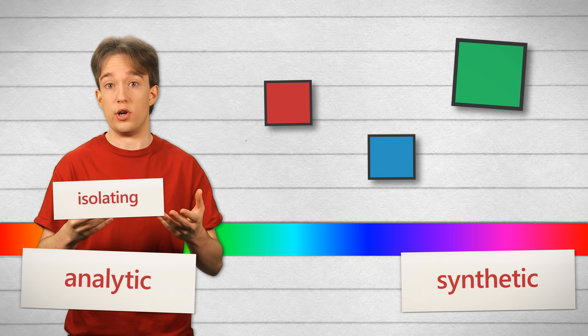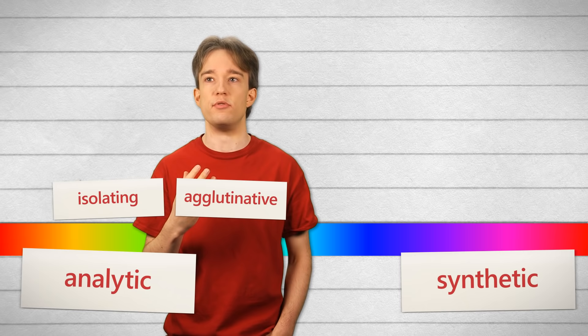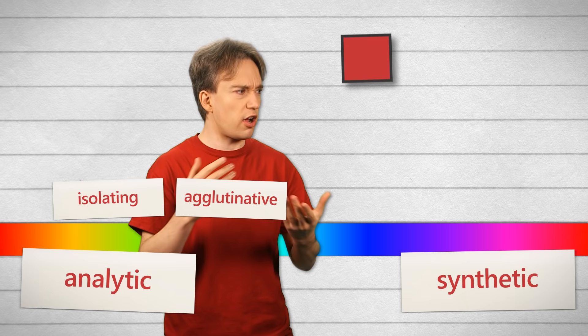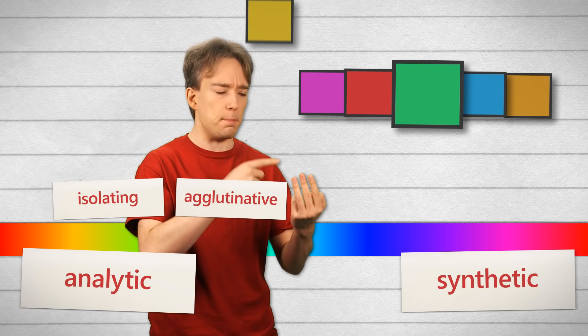Next along the spectrum, there are the agglutinative languages, like Turkish and Inuktitut. Agglutinative — that's a lovely word — has the same Latin roots as the word glue. You are gluing words together from their component parts. So rather than picking extra words to add to your sentence, you are adding prefixes or suffixes to words that are already there. Now, depending on the language, you might add affixes for tense, person, number, belonging, possession, or even things like whether an action was deliberate or not.